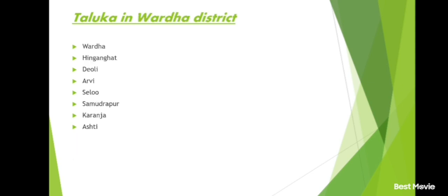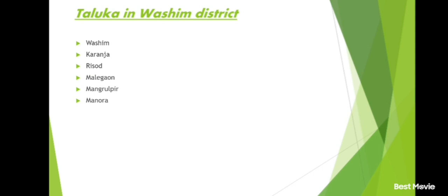Thane district and its talukas: Thane, Kalyan, Vasai, Bhiwandi, Ambarnath, Palghar, Ulhasnagar, Dahanu, Shahapur, Murbad, Wada, Talasari, Jawhar, Vikramgad, Mokhada.